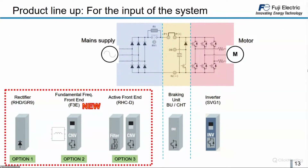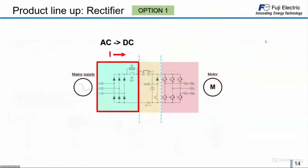Today's webinar covers which modules can be installed on the input stage of this system. Option one is the rectifier, of which we have two types: RHC and GR9. Then we have the fundamental frequency front end, called F3, and finally the active front end, the RHC.